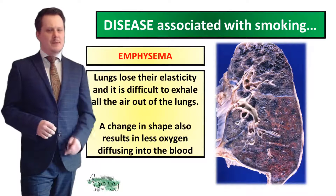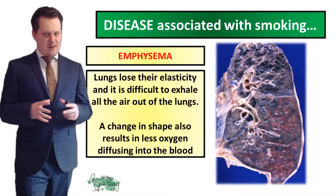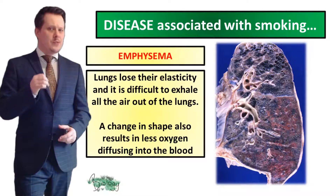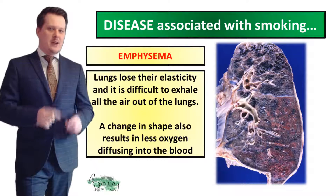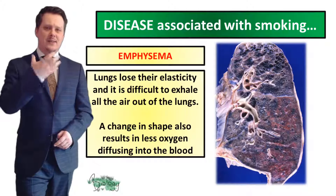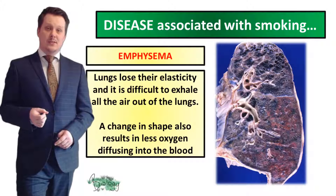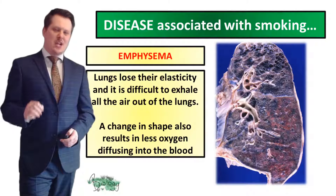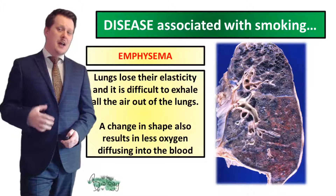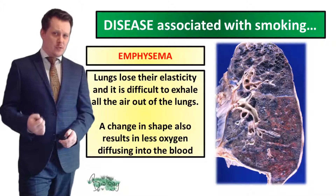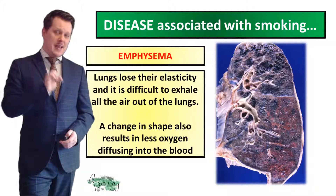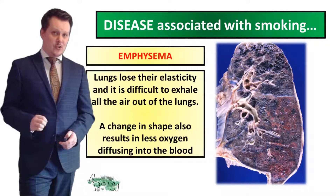Another disease associated with smoking is emphysema, where the lungs lose their elasticity. When you breathe out your lungs recoil, and you lose the ability to do this when you have emphysema, making it difficult to exhale all of the air out of the lungs. There is also a change in the shape of the alveoli, which decreases the surface area and slows down the rate of diffusion, meaning oxygen does not diffuse from the alveoli into the blood as efficiently as it should.